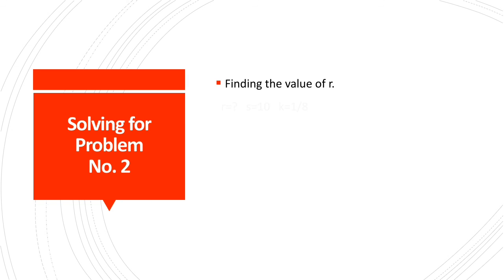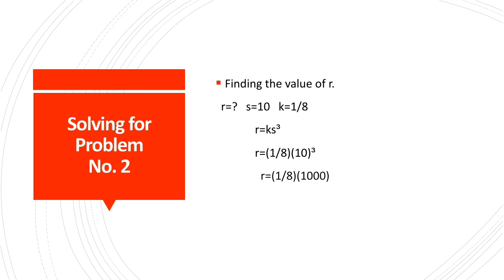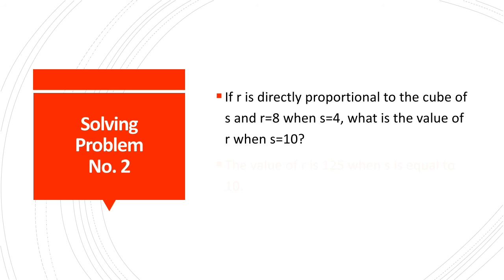In finding the value of r, we get the final values and the value of k, then substitute them into r equals k times s cubed. Now we have r equals 1/8 times 10 cubed. We simplify: r equals 1/8 times 1,000. 1/8 times 1,000 equals 125. That's the value of r. The value of r is 125 when s equals 10.